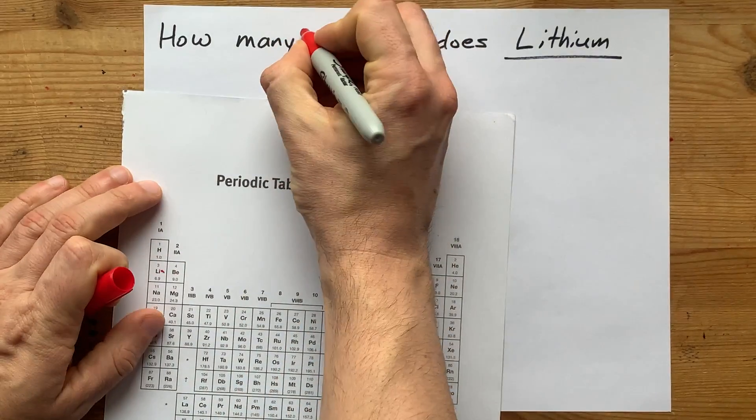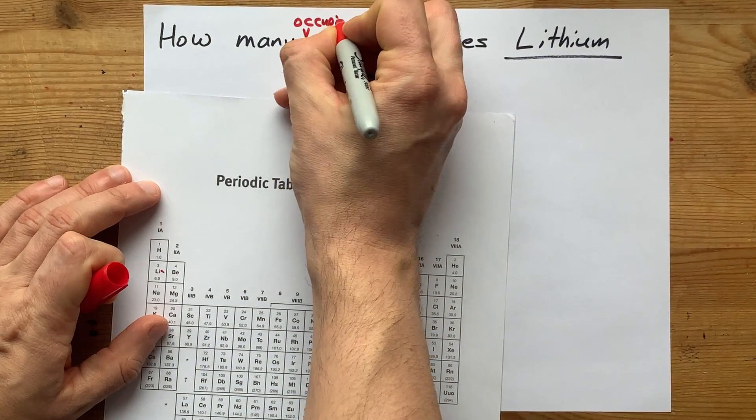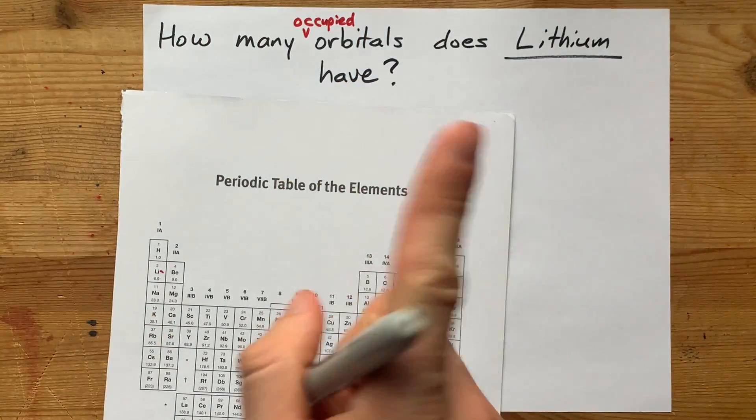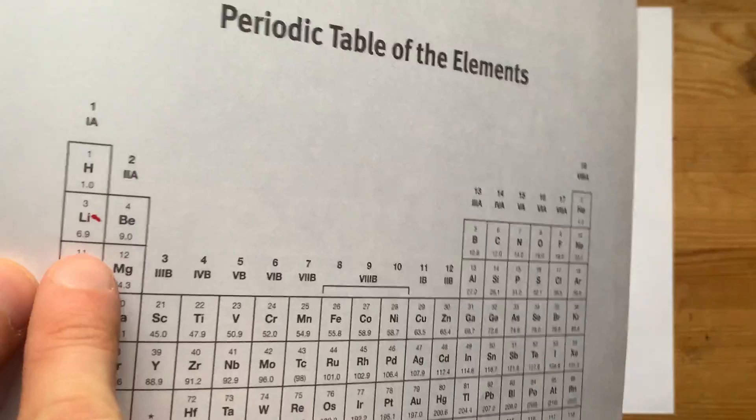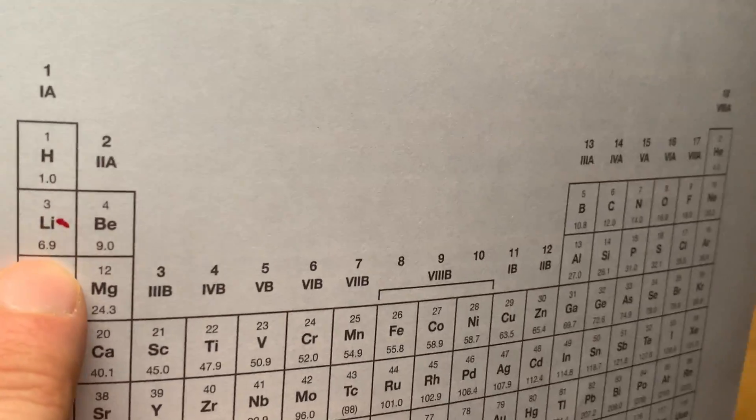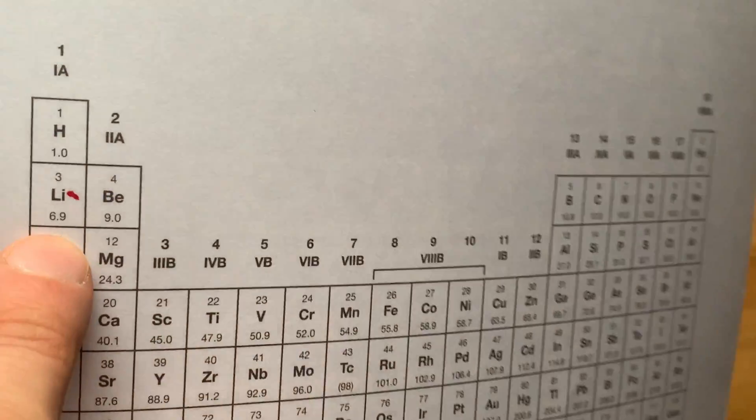If the question is how many orbitals actually have electrons in them, that's probably what they meant. But to figure that out, let's see where lithium is on the periodic table. It's here in the second row, first column.